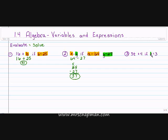5t plus 4 if t equals 3. So wherever I see a t, I'm going to put a 3. When there's no operation, it can be a variable and a variable or it can be a variable and a number. Any time they're pushed together like that, it automatically means you're going to use the operation of multiplication.